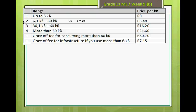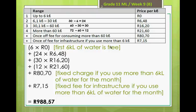So if you consume in this line, there are 24 kilolitres to consume — 30 minus 6 is 24. In the next line, if you consume more than 30 kilolitres, we have consumed more than 30 kilolitres, so in this line we have consumed 60 minus 30, which is 30 kilolitres. And in total we've consumed 72 kilolitres, so it means that in this line we've consumed an additional 12 kilolitres.